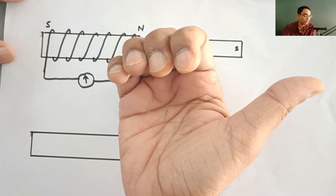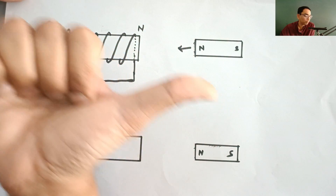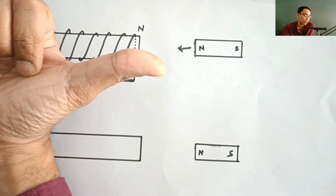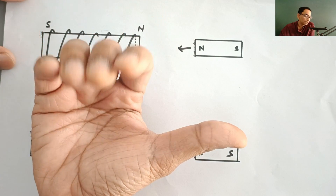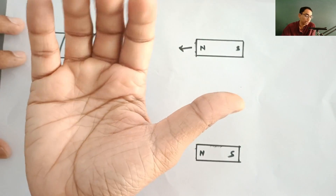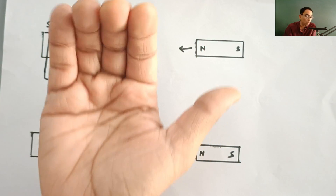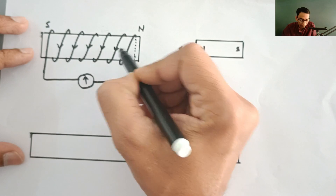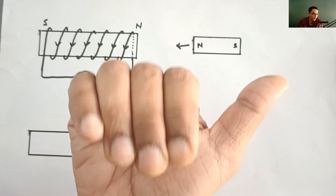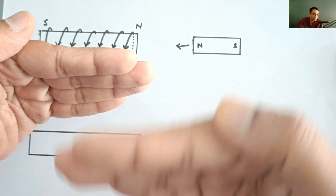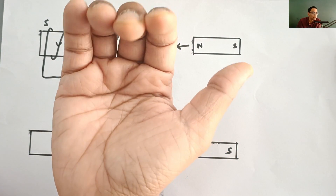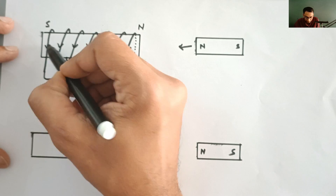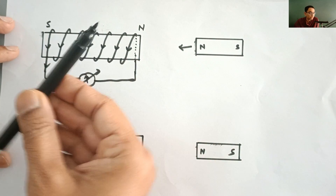Now use the right hand thumb rule — the thumb should be pointing towards the North of this particular coil. We know that here the North is formed, so the thumb should be pointing towards it. Now curl the fingers in this way; you can't curl the fingers backwards. Curling the fingers like this means the current is actually overflowing out and going downwards — just like water flowing out of a dam, where the water comes over the walls and falls down. In the same way, the current falls down. So it would come down like this, meaning the pointer is going to deflect in this direction, and the current is going to climb up from the other side.